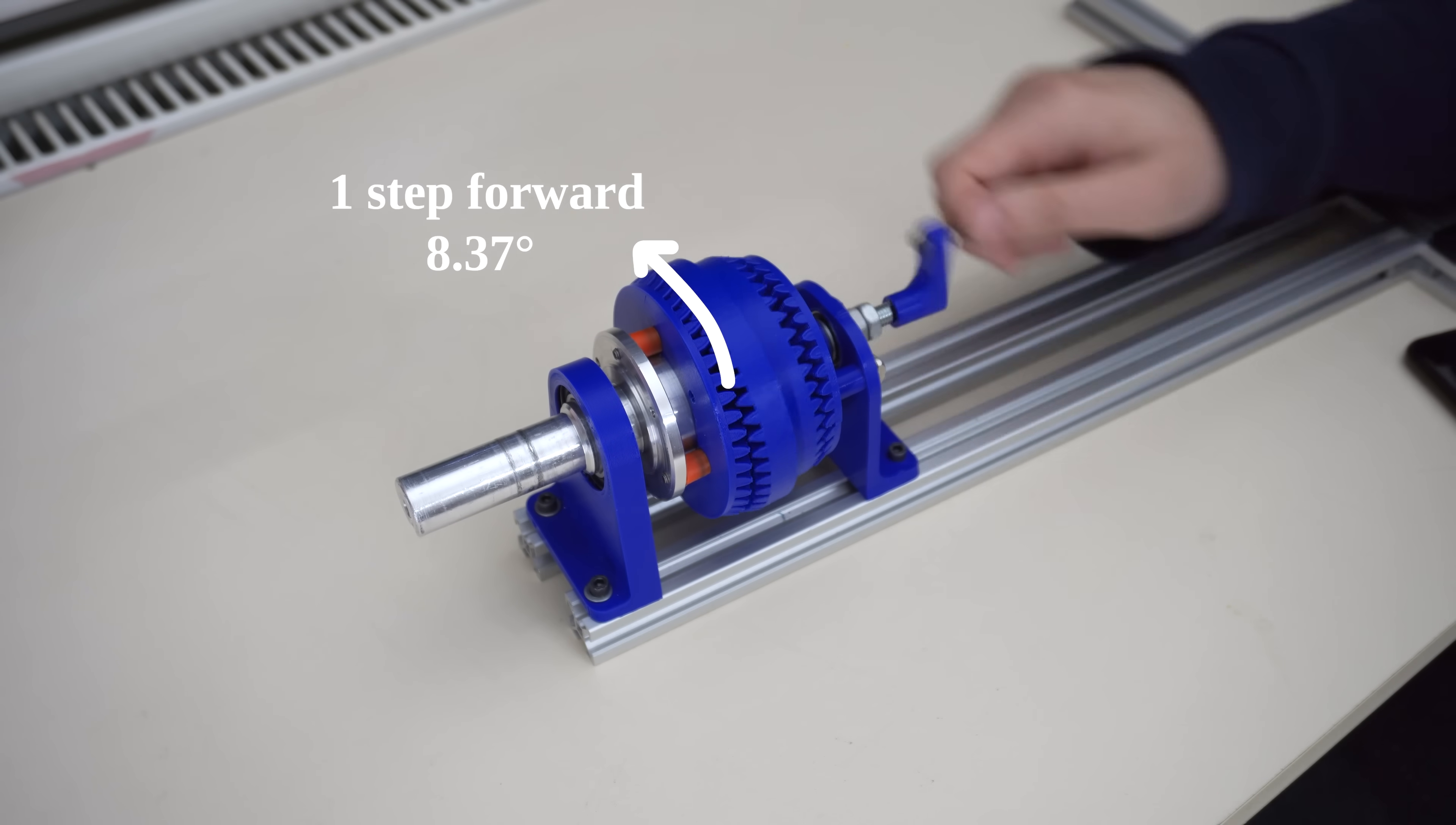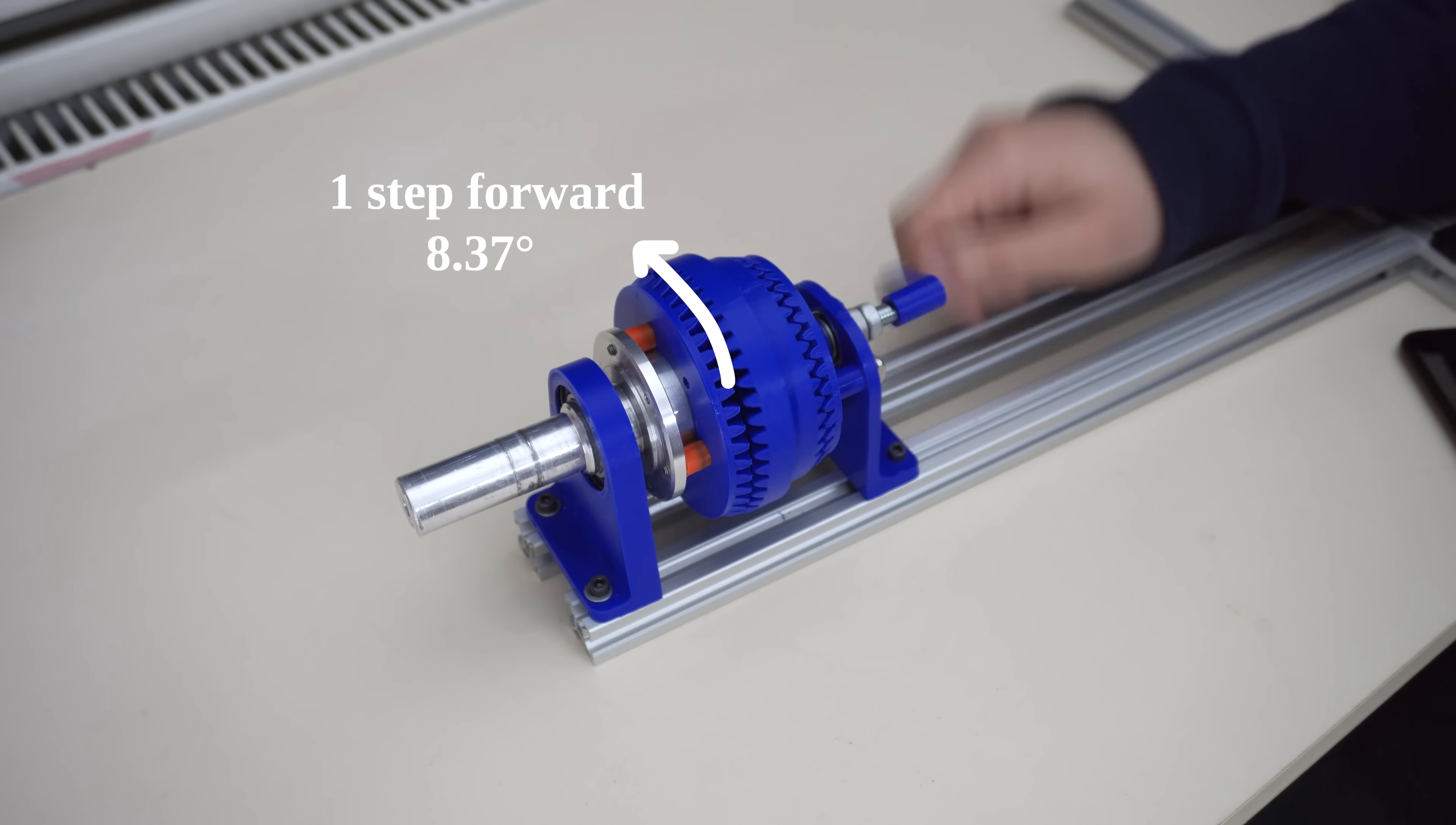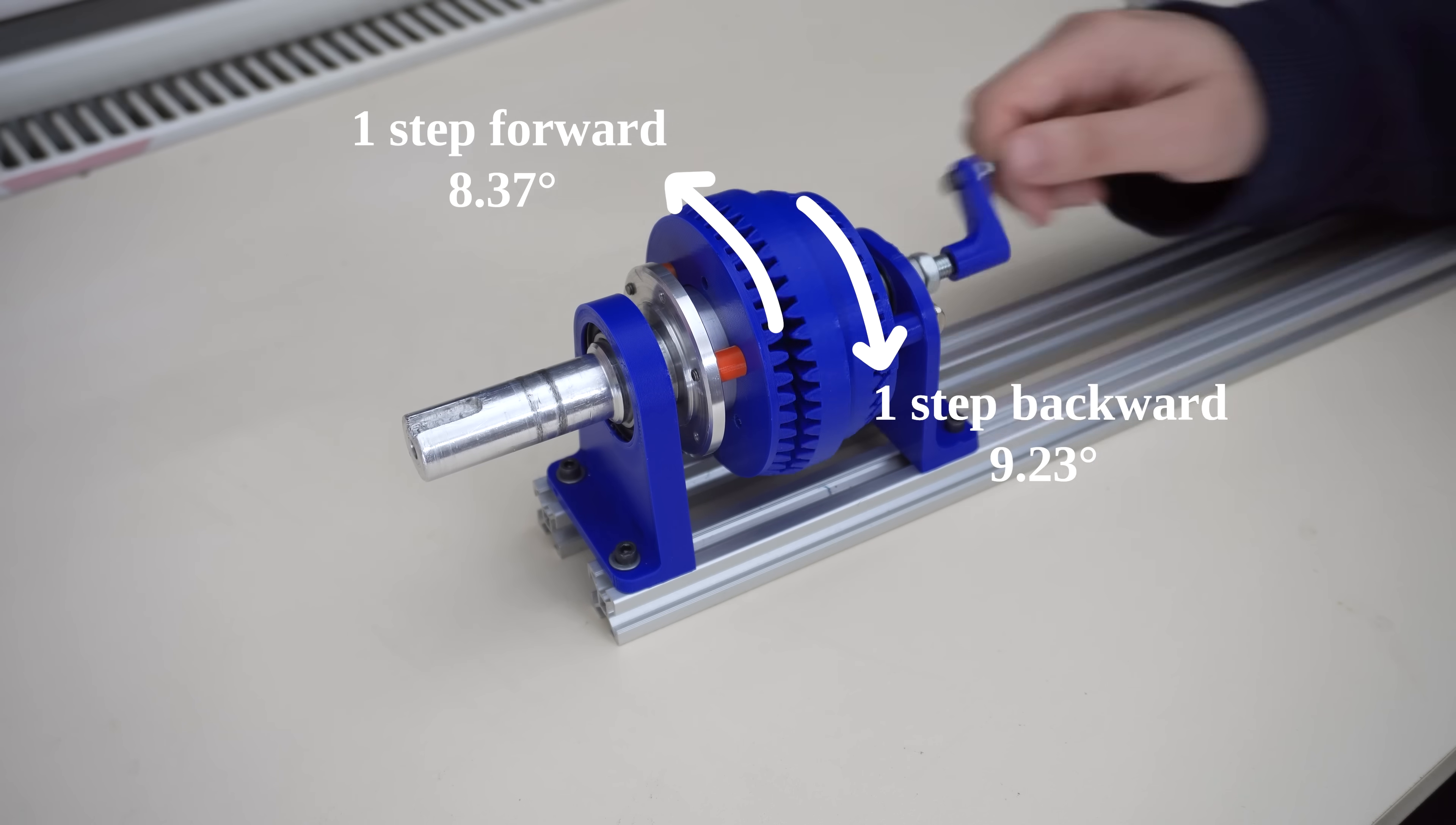So what's happening here right now? The wobbling gear rotates one step forward at the front. But before that, it also rotates one step backward at the rear. So in total, when the input shaft makes one full turn, it rotates a very small amount, just as much as the difference between these two movements.